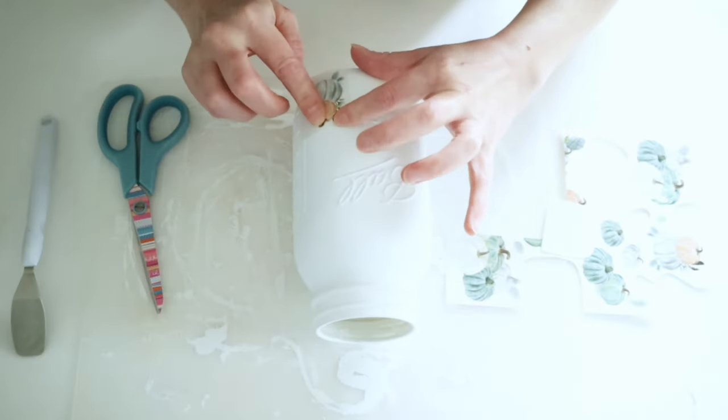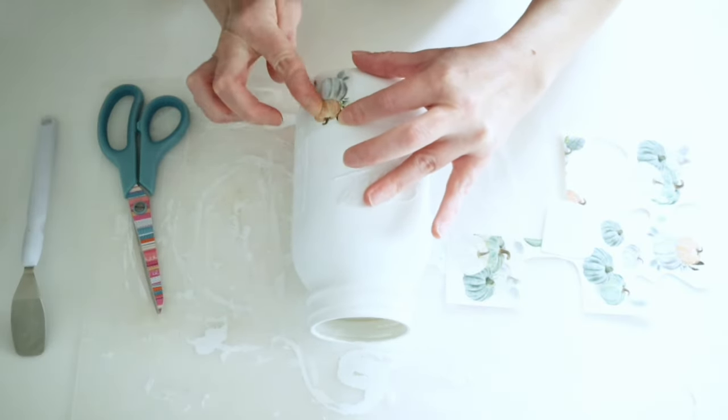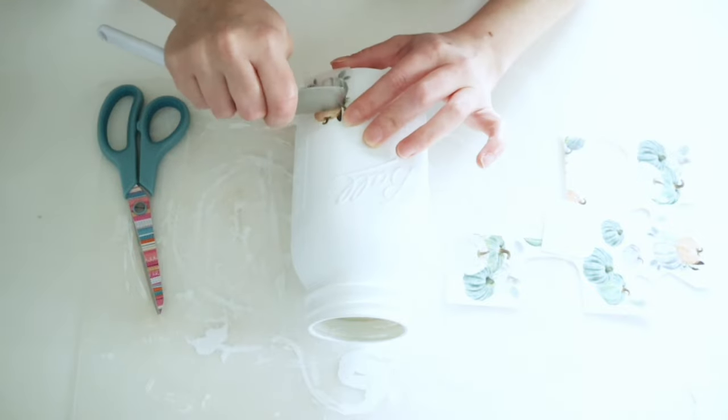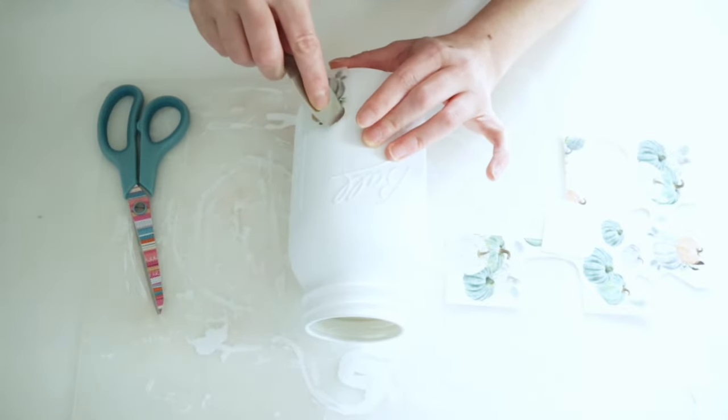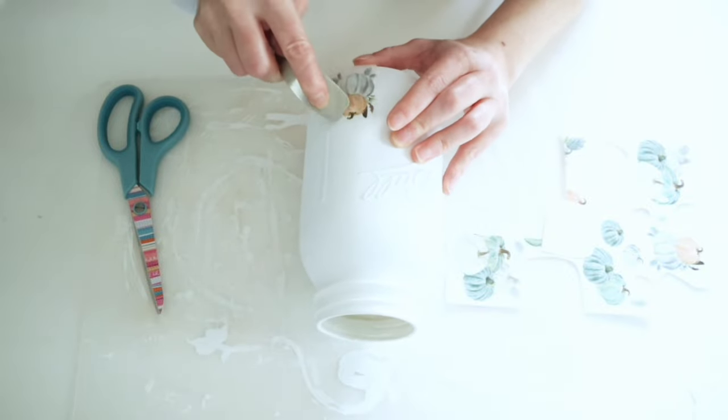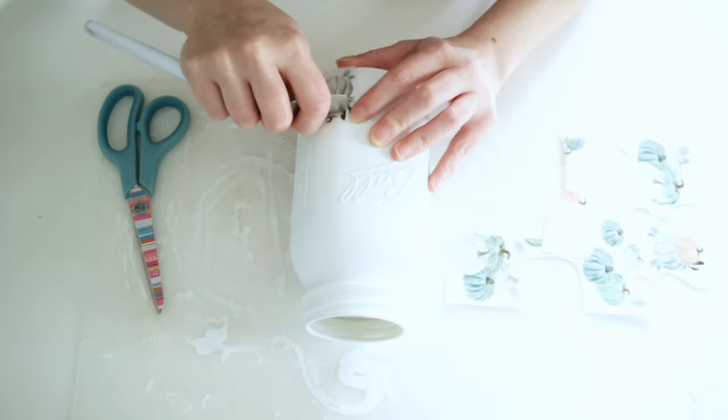Then for the large mason jar, I just picked out some of the other rub-on transfers that I liked. I wanted to put some pumpkin ones on here and I'm just going to rub those in. I also added a couple leaves to this one as well.